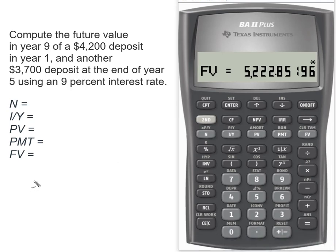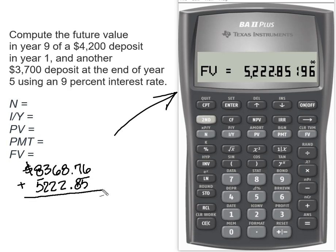So now I'm going to take that present value that I found for my first cash flow, and that was $8,368.76. And I'm going to add what I just got over there, which is my $5,222.85. I'm going to add those two sets of cash flows together. And so my calculator tells me that the total future value is $13,591.61.